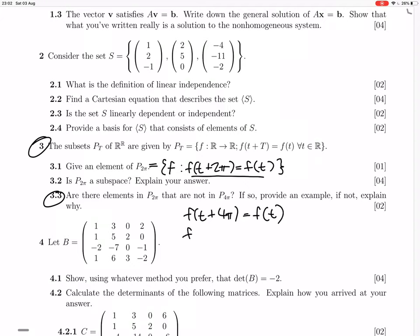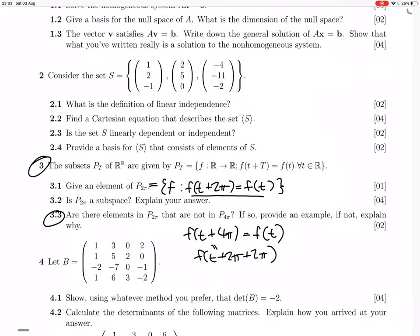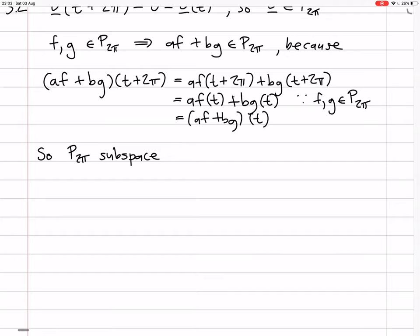No, because 4π is 2π plus 2π. So, then you could say, oh, that's equal to f of t plus 2π. Oh, but that's equal to f of t. So, in other words, P2π is completely a subset of P4π. Everything in P2π is in P4π.